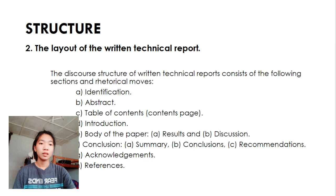For the next guidelines for making the structure, it is the layout of the written technical report. The discourse structure of written technical reports consists of the following sections and rhetorical moves: identification, abstract, table of contents, introduction, body of paper. It can put it there, the result, or the discussion. Conclusion contains the summary, conclusions, and recommendation, and the acknowledgement and the reference.